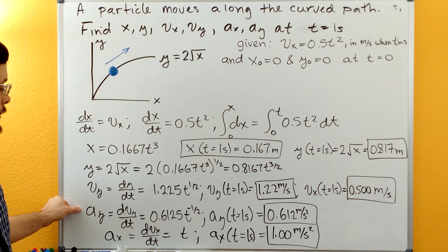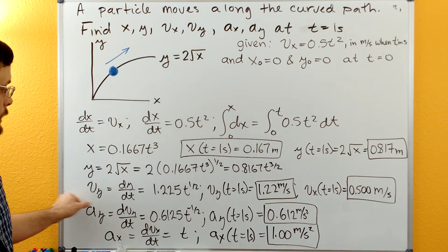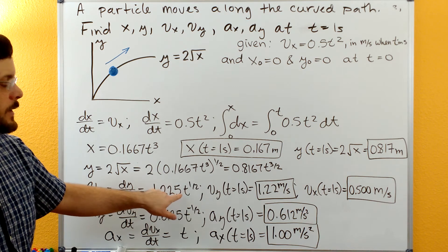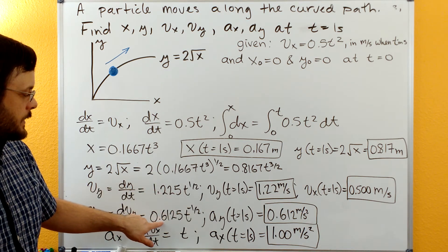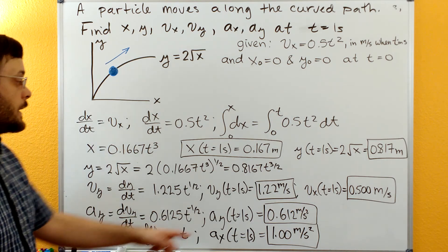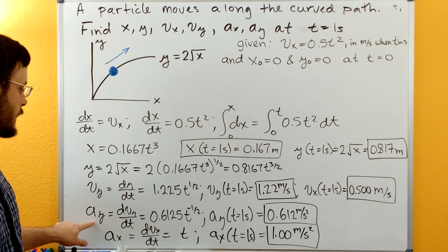And then now we can calculate our acceleration. So with our acceleration, that'll be the time derivative of our velocity function. So here's our velocity function. We'll have one half times its coefficient, so 0.6125 times t to the negative one half. Again, plug in t equals one second and we get our acceleration in the y.